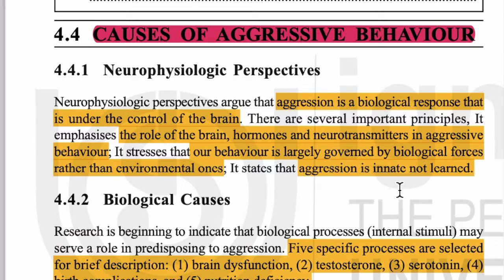पहला cause है neurophysiologic perspective। इसमें बताया गया है कि aggression एक biological response माना गया है जिसे brain control करता है। हमारा दिमाग aggression को produce करता है। Brain के अलावा hormones और hormonal changes की वजह से भी aggression होता है। Neurotransmitters — जो chemical हमारा brain produce करता है — वो nervous system में impulses को pass on करते हैं।